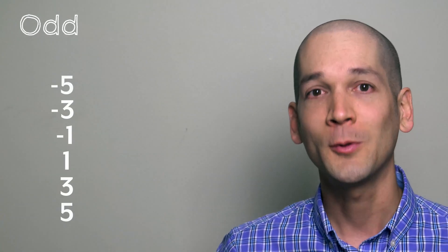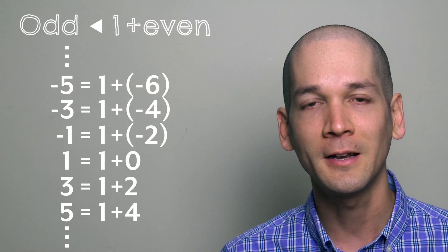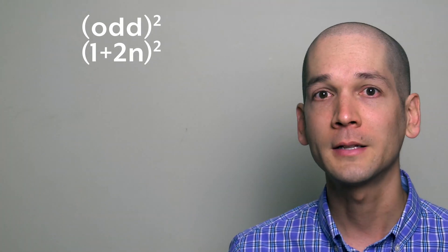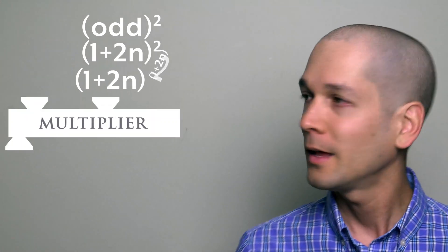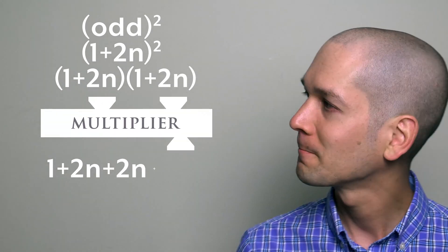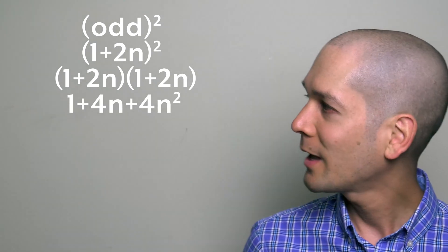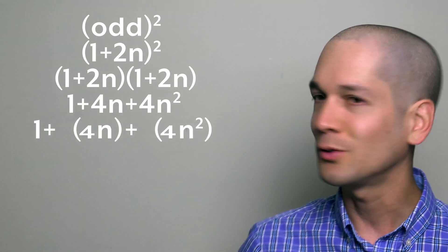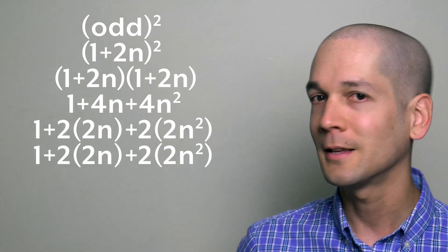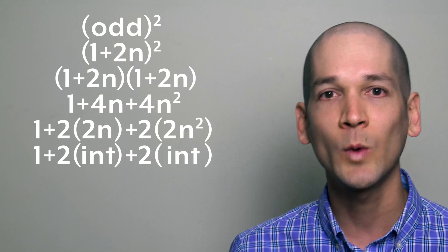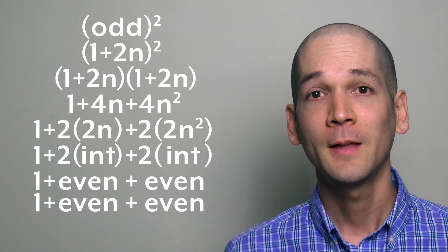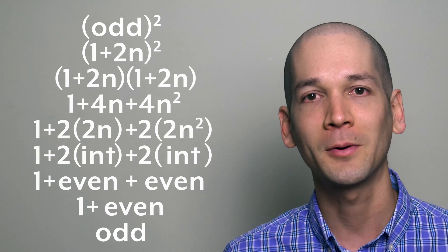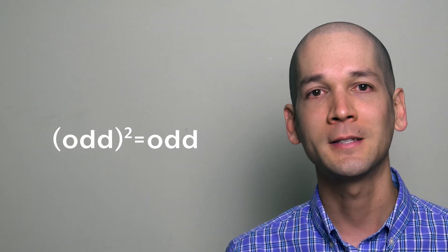Every odd number you can think of can be represented as 1 plus some even number. So, the square of an odd number can be represented as (1 plus 2 times integer n) all squared. Expanding this equation and collecting like terms, we have 1 plus 4n plus 4n squared. Factoring a 2 out of the last two terms: 2n is an integer, and so is 2n squared, which means the last two terms are even. The sum of two even numbers is even, and 1 plus an even number is an odd number. Therefore, an odd number squared is an odd number.